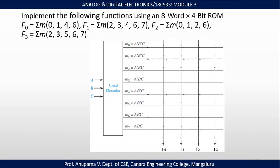We have studied that a 2^N × M ROM can implement M functions of N variables. Now let us implement example functions to understand how ROM can be used. We will implement the following functions using an 8-word × 4-bit ROM: F0 = Σm(0,1,4,6); F1 = Σm(2,3,4,6,7); F2 = Σm(0,1,2,6); F3 = Σm(2,3,5,6,7).